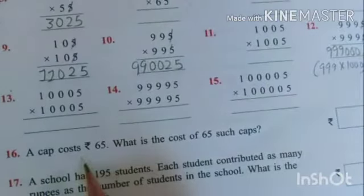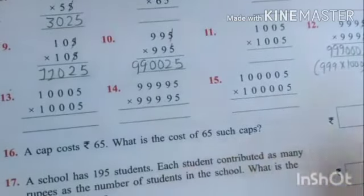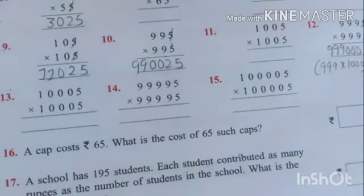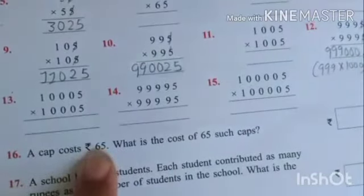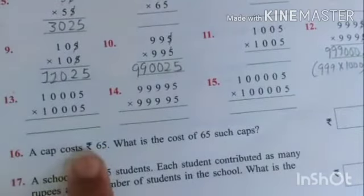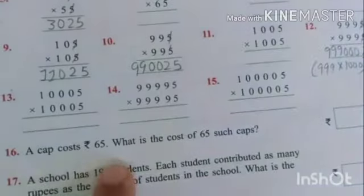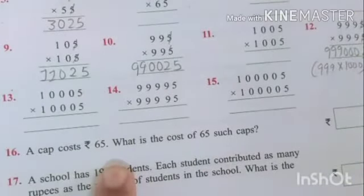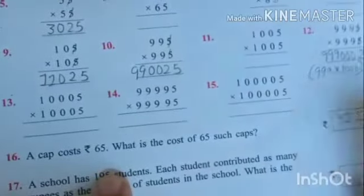Now a cap costs rupees 65. What is the cost of 65 such caps? It means 65 multiplied by 65. To 5 ko kat karenge, so you will get 6. 6 ko next number se multiply, that is 6, 7's are 42. 42 mila or 25 we have to add.